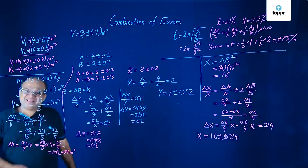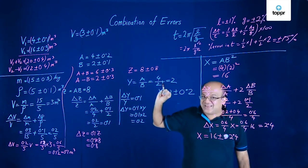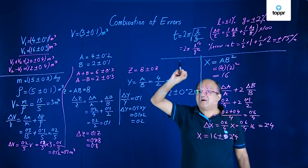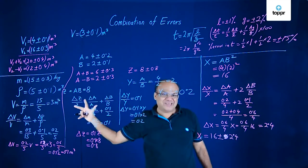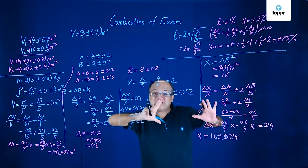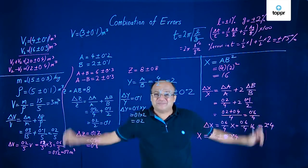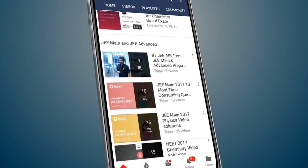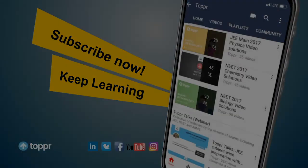Remember, in multiplication or division, fractional errors are added. That means percentage error also gets added. And in power, that power becomes the coefficient. If you know this, you know everything about combination of errors.